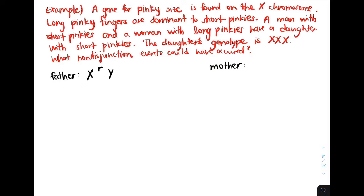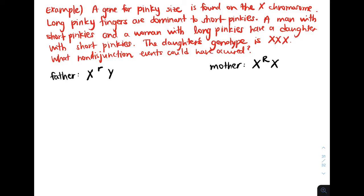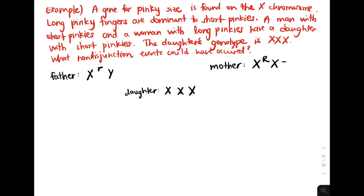What about the mother? We know the mother must have two X chromosomes, and she has long pinkies. Long pinky fingers are dominant, so she must have at least one dominant allele. But she could be either homozygous dominant or heterozygous, so we're going to leave the second allele blank. The daughter's genotype is XXX, and she has short pinkies. Short pinkies is a recessive allele, so the daughter must have all three alleles being the recessive allele. Because if she had even one dominant allele, she would have had long pinkies, not short pinkies.